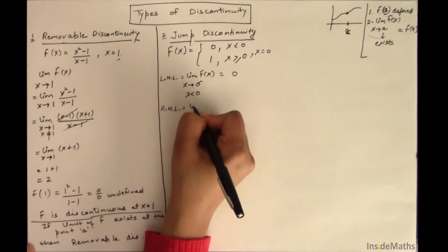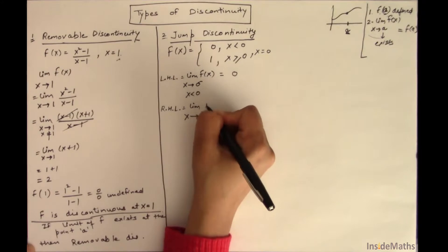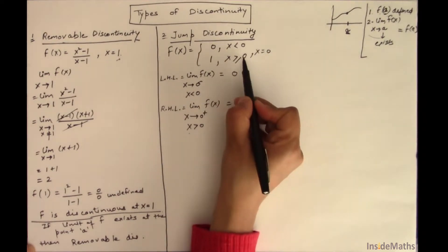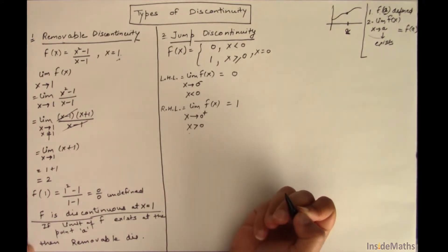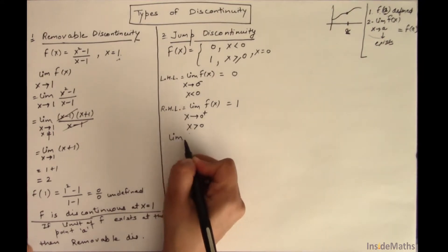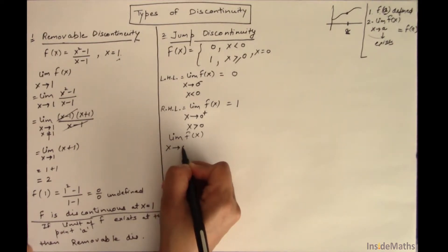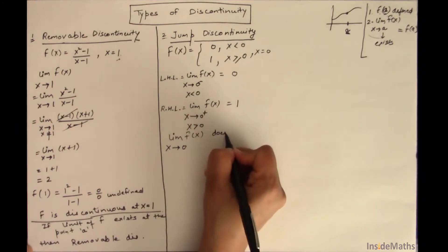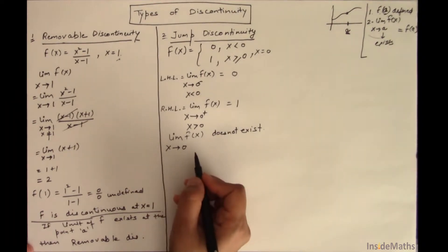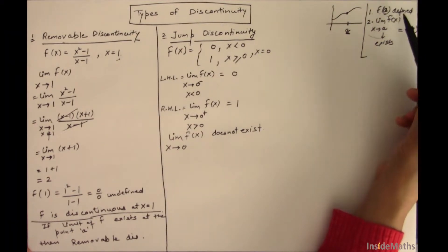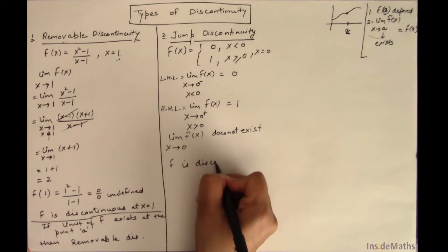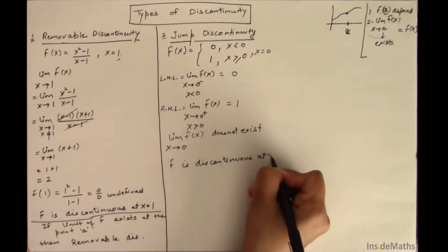Now I have to find the right-hand limit — that is, when x is approaching 0 from the right side, meaning when x > 0. From the function, when x > 0, the value of the function is 1. The left-hand limit is 0 and the right-hand limit is 1; these two are not equal. That means the limit of the function at point 0 does not exist, so the function f is discontinuous at point 0.